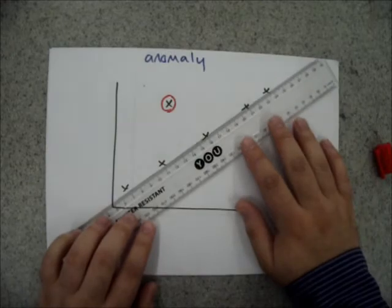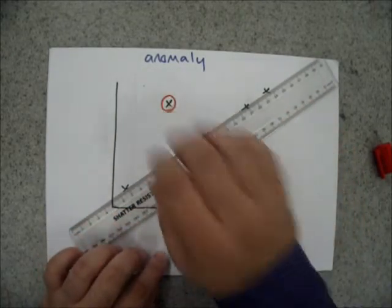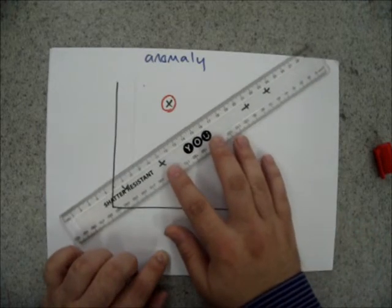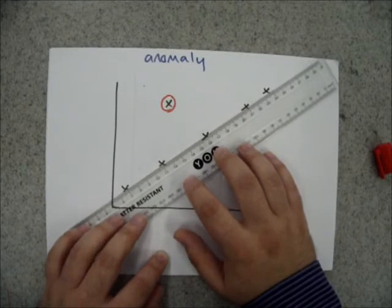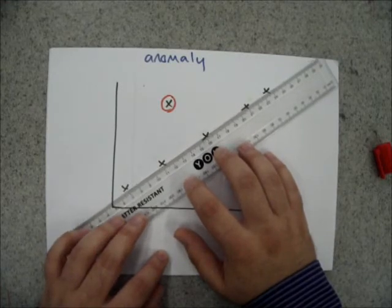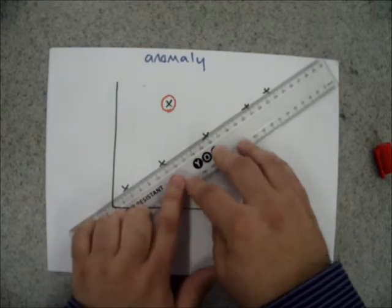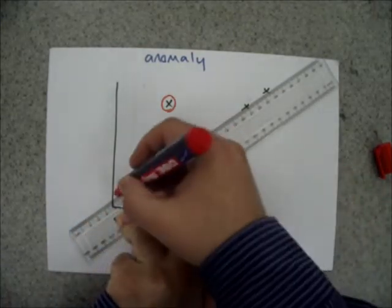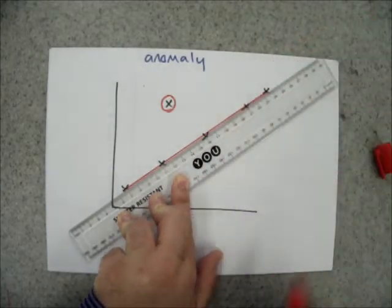And then, when drawing the line, you act as though that point is not there. So, if I was not treating this as an anomaly, my line of best fit would be something like this. But because I'm treating it like an anomaly, I ignore that it's there, and I do the same thing I've done previously. One single, straight line that goes through as many points as possible.